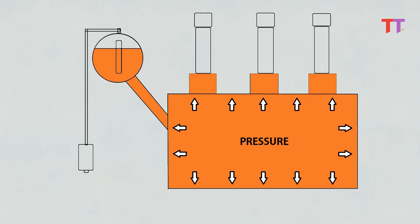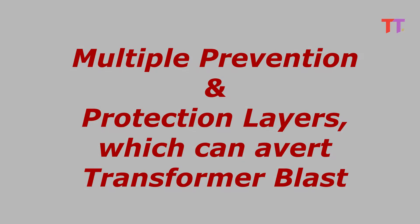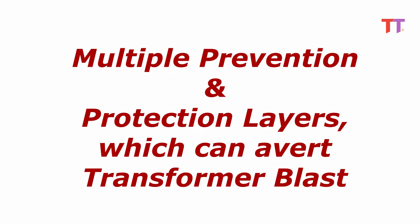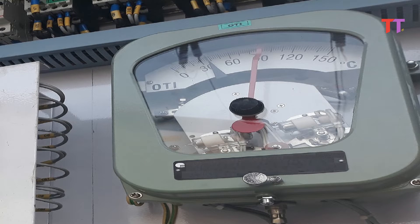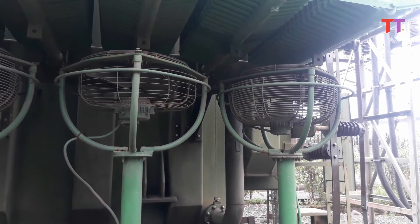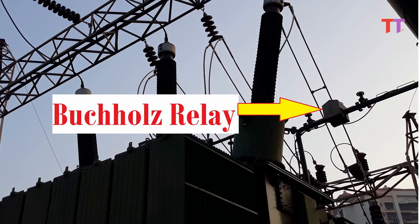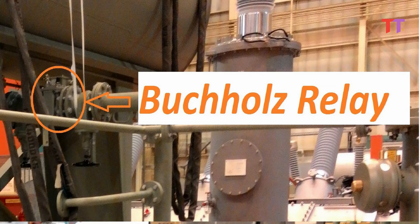Severe faults create huge pressure in a very short period of time. This pressure is so huge that it explodes the transformer. There are multiple prevention and protection layers which can avert transformer blast. Temperature rise of oil is monitored by OTI, called as oil temperature indicator. Also, an effective and functional cooling system prevents temperature rise.